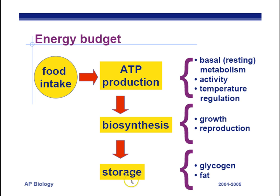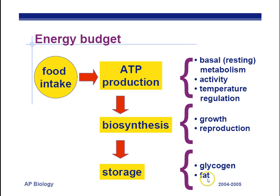And then storage — any extra energy left over after your ATP production needs are met, as well as biosynthesis, is just stored. Glycogen is a chain of glucose stored in the muscles and liver as a ready supply of energy. And then we have fat, which is a long-term storage. You can't break it down very quickly; however, it does provide twice as much energy as carbohydrates like glycogen.